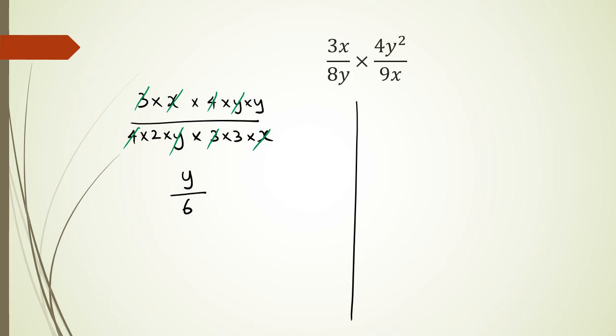So if you were to do this in a quicker way, because it's a multiplication side, you can actually cancel things out on the opposite fractions. So for example, because it's being multiplied, I could cancel out these two x's. And I could cancel out this y with 1y from here.